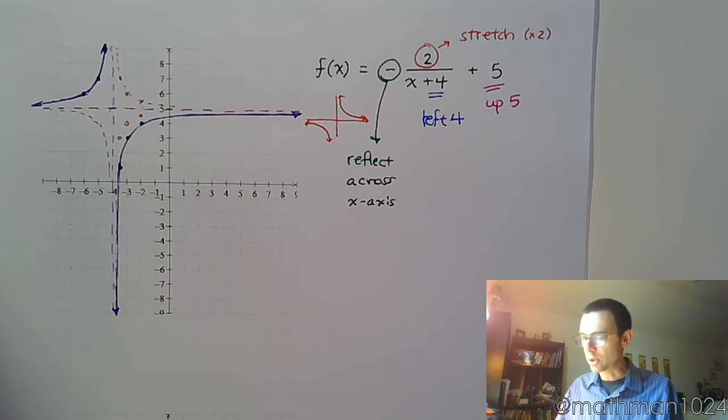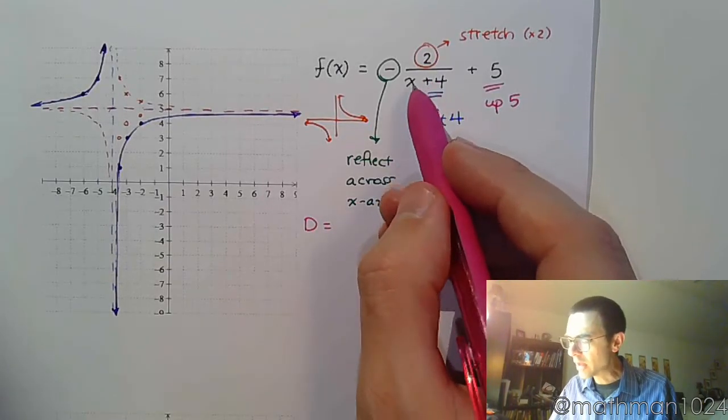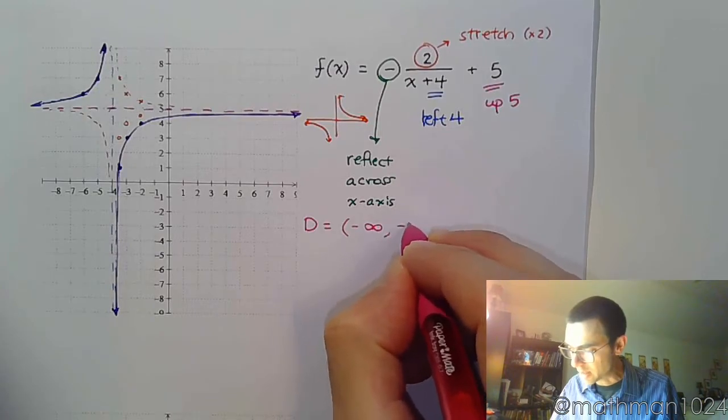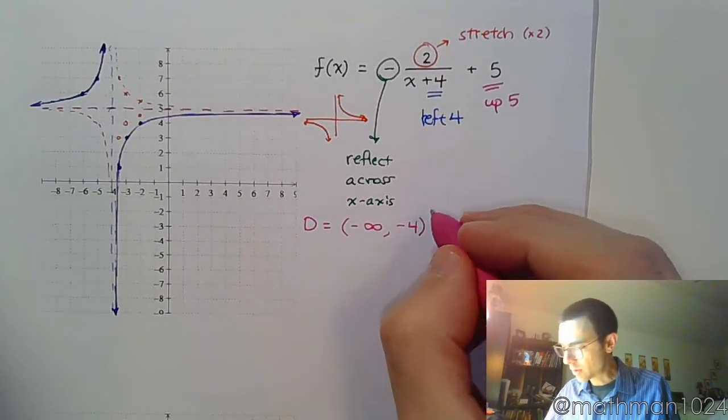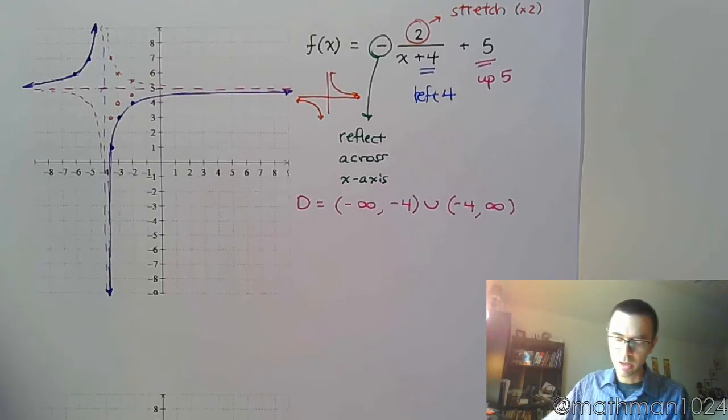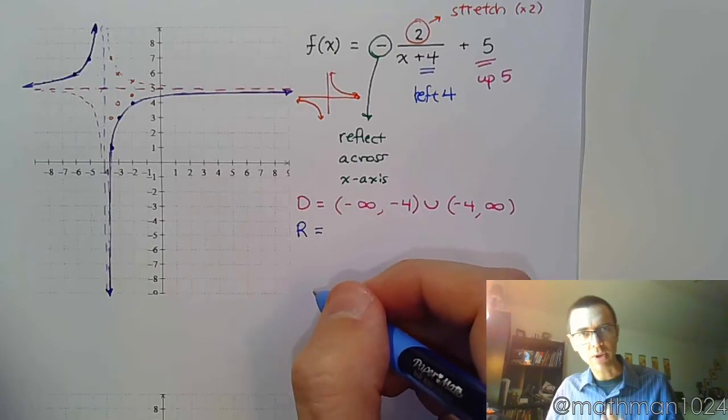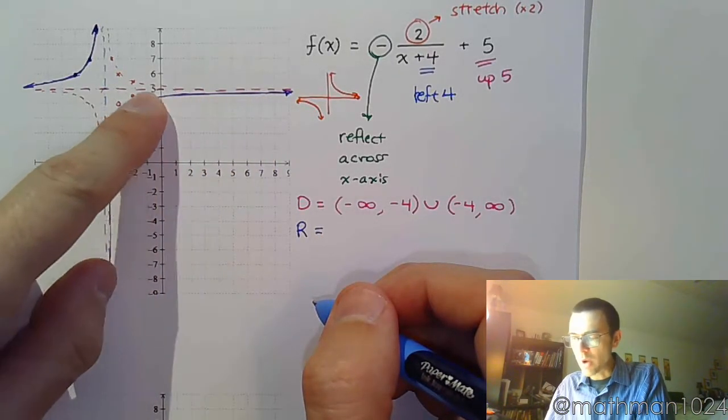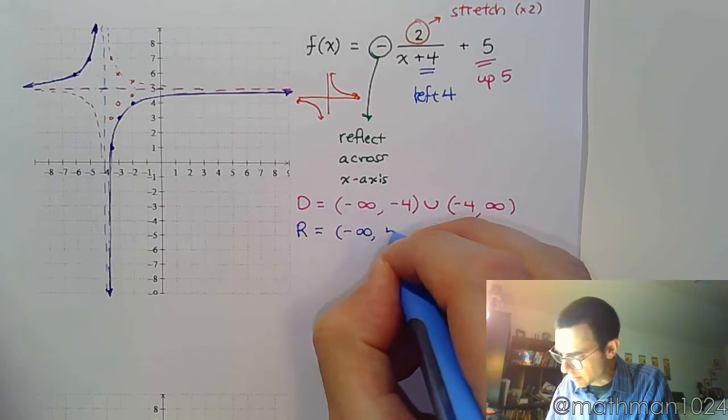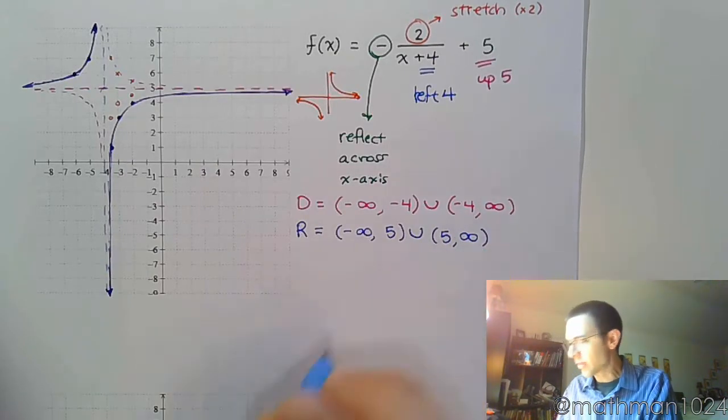But let's finish this though. Let's talk about our domain. So my domain is, as we go from left to right, the only value that is bad for this denominator is negative 4. So the domain is everything but negative 4. So negative infinity to negative 4, union negative 4 to infinity. My range is bottom to top. The only skip, the only gap that I have in my range is going to be right here when y equals 5, because I shifted that horizontal asymptote up 5. So that's from negative infinity to 5, union 5 to infinity.